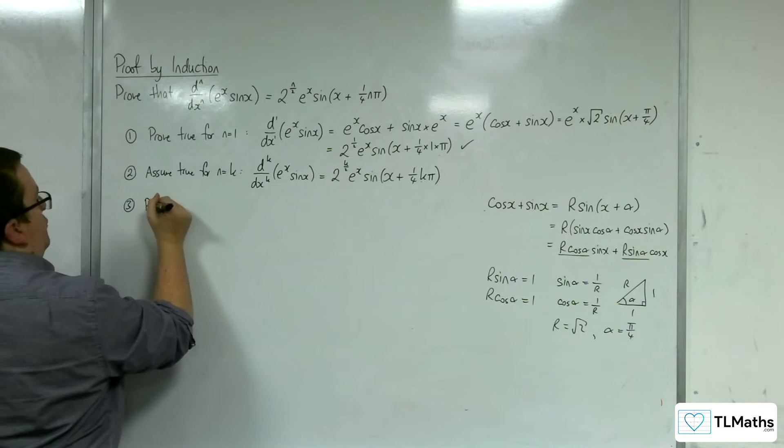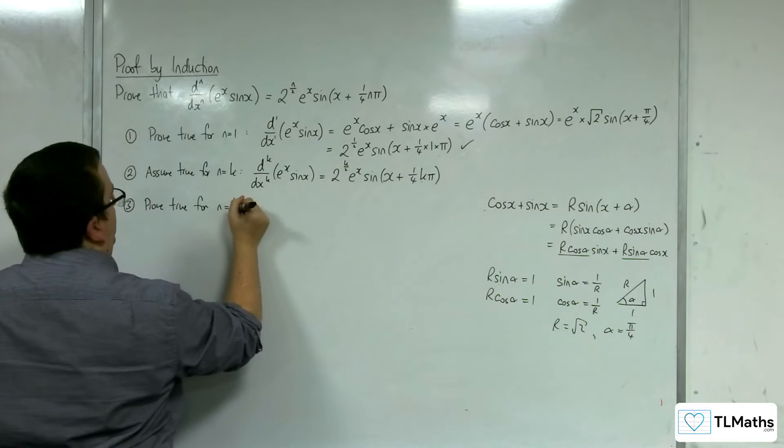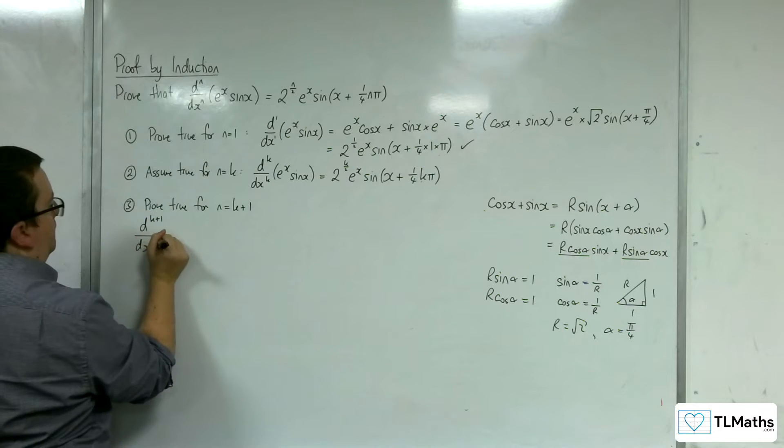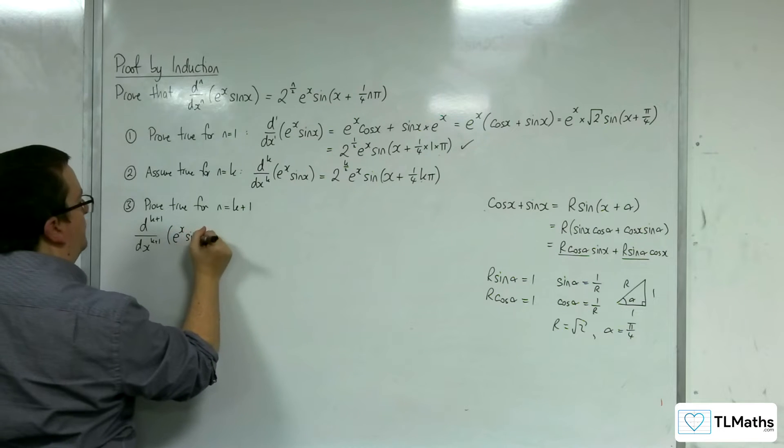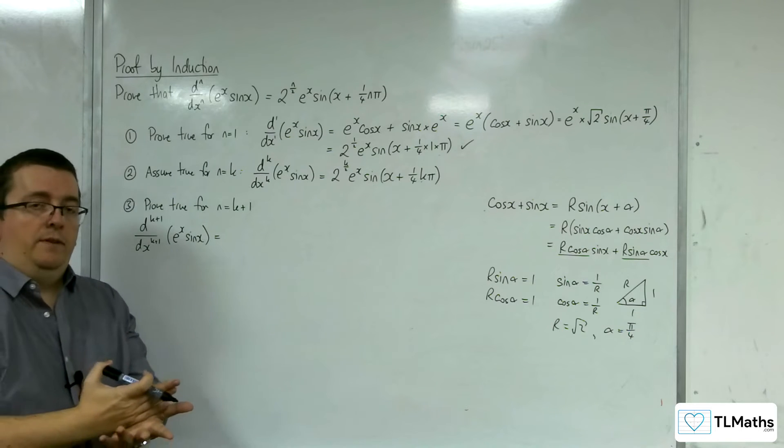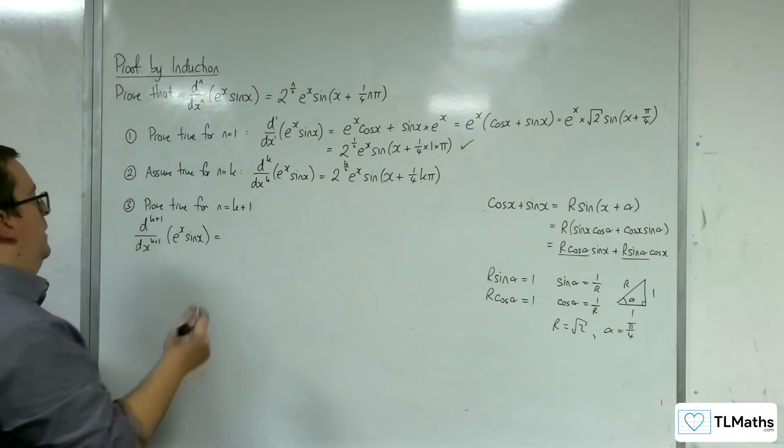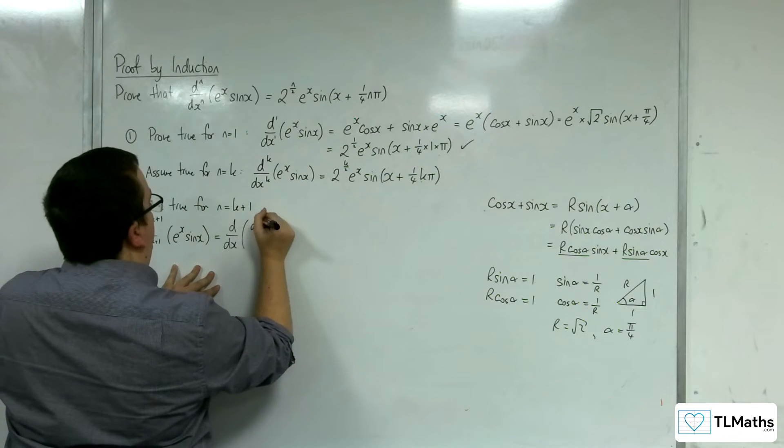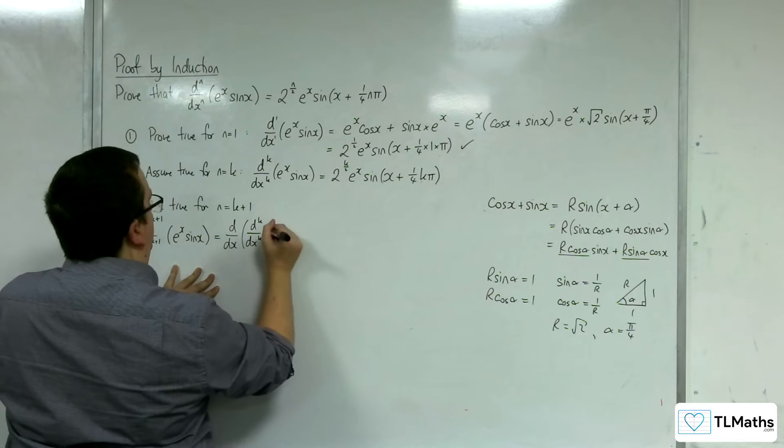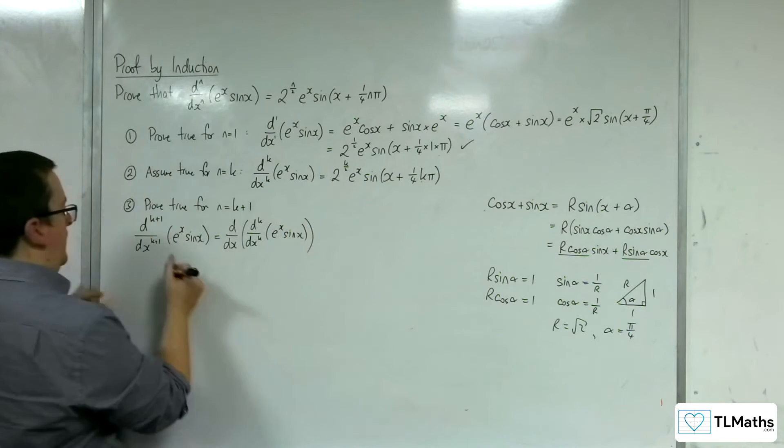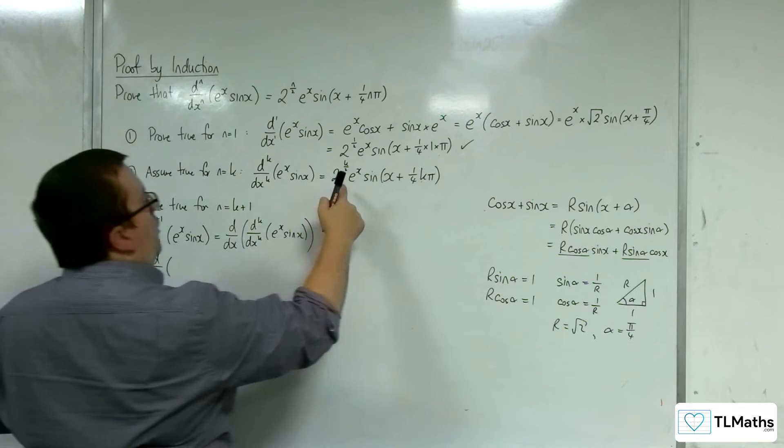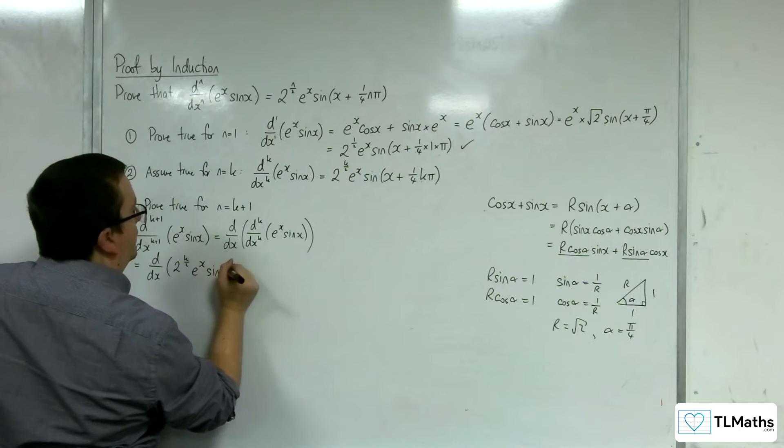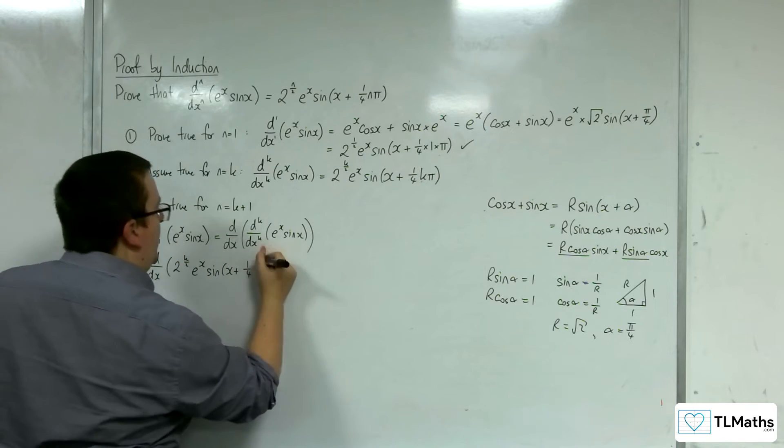Step 3, we need to prove that it's true for n equals k plus 1. So we want to find the k plus 1th derivative of e to the x sine of x. Now, the k plus 1th derivative is the derivative of the kth derivative. So this is the derivative of, let's write it as dk over d xk e to the x sine of x. So we want the derivative of this. So 2 to the k over 2 e to the x sine of x plus 1 quarter k pi.